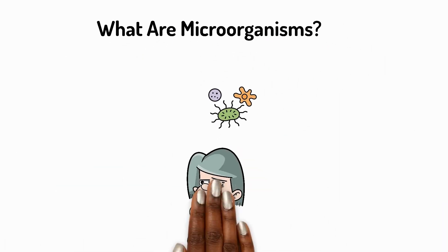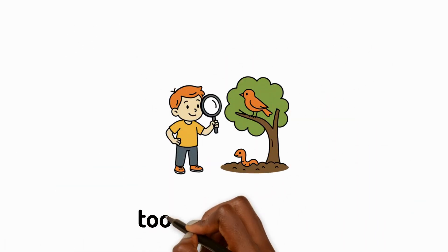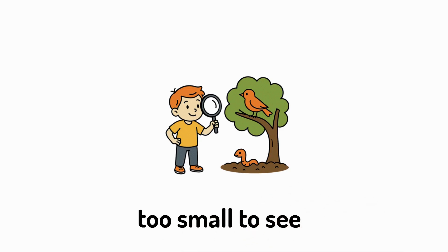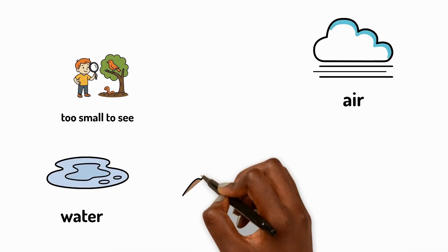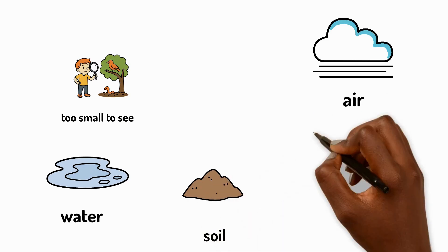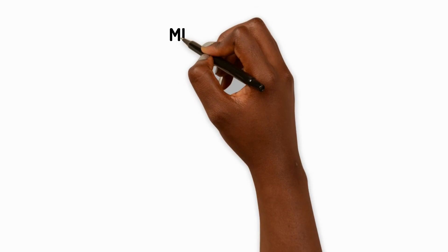What are microorganisms? Imagine a world too small for your eyes to see. A world full of living things that can be found in water, air, soil and even inside your body. These tiny living things are called microorganisms.